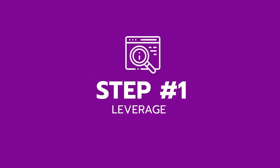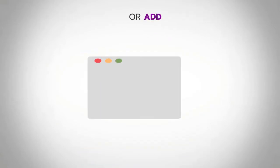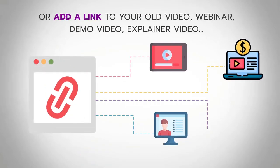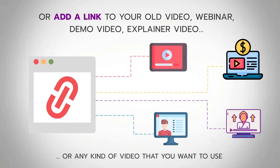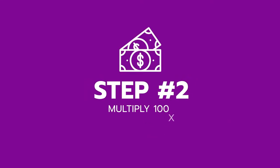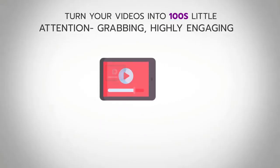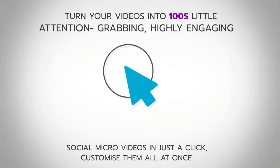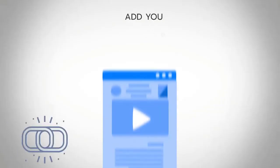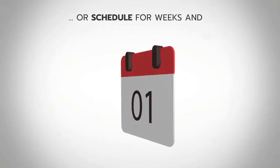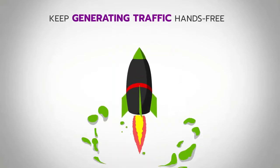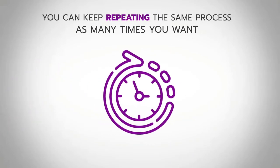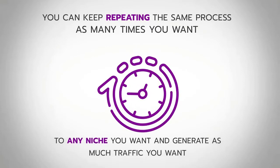Step number 1: Leverage. Find a viral video in your niche, or add a link to your old video, webinar, demo video, explainer video, or any kind of video that you want to use. Step number 2: Multiply 100 times. Turn your videos into hundreds of little attention-grabbing, highly engaging social micro-videos in just a click. Customize them all at once. Step number 3: Profit. Add your link and publish right away to Facebook and Instagram, or schedule for weeks and months. Keep generating traffic hands-free. You can keep repeating the same process as many times as you want, in any niche you want, and generate as much traffic as you want.